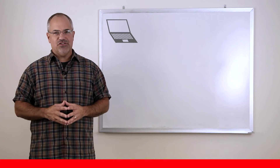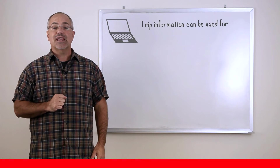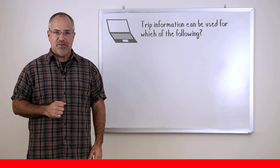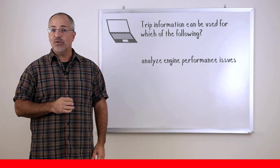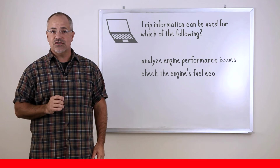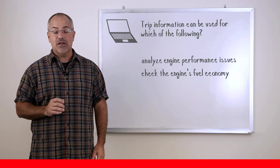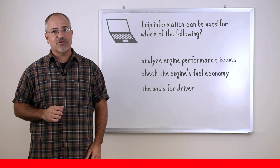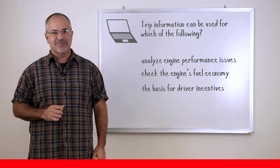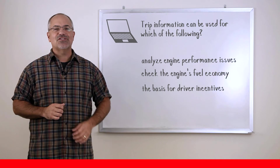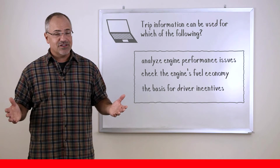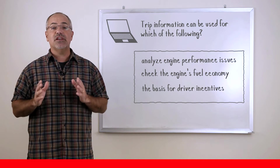Time for a knowledge check. Trip information can be used for which of the following? To analyze engine performance issues, to check the engine's fuel economy, or as the basis for driver incentives? Here's the answer: all three of these are good ways to use the trip information feature. If you're interested in seeing your trip information, ask your manager or supervisor to share it with you.